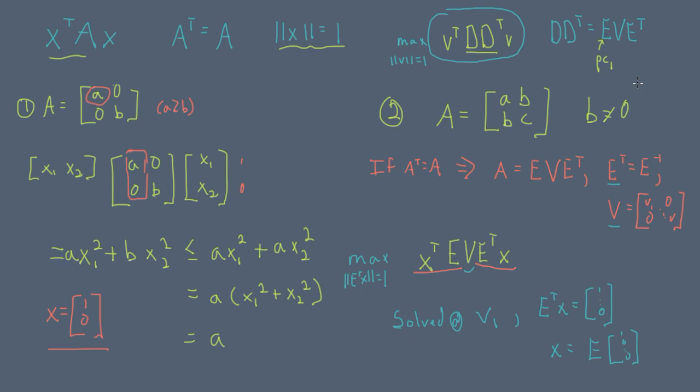The remaining principal components are the remaining eigenvectors of DD transpose, and they have the interpretation that they maximize the projection of the data onto them with the further constraint that they are orthogonal to all previous principal components.